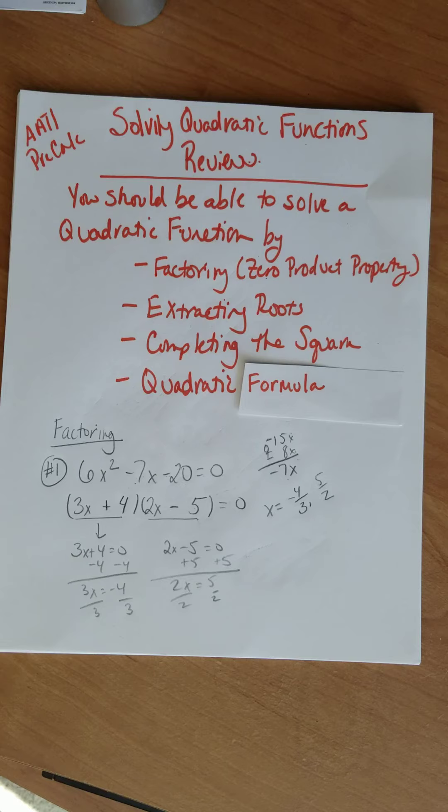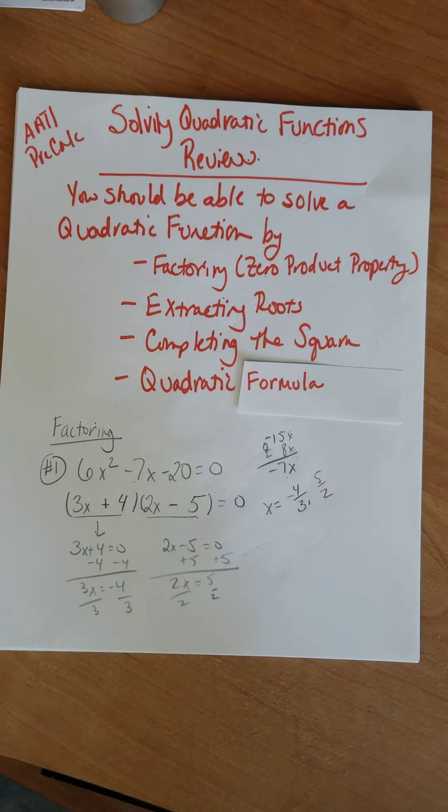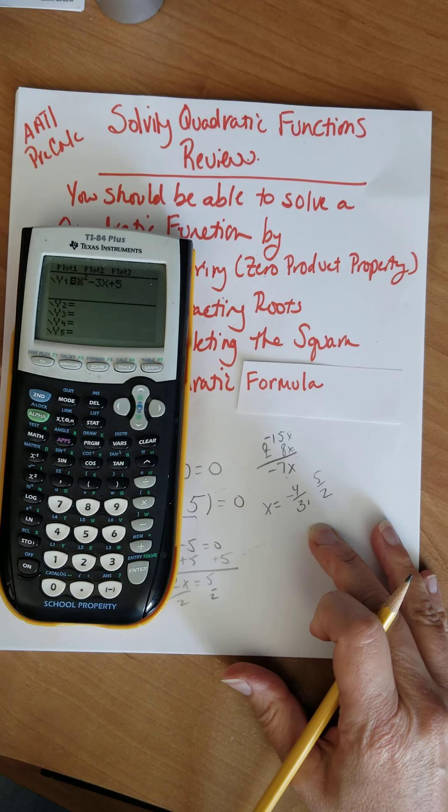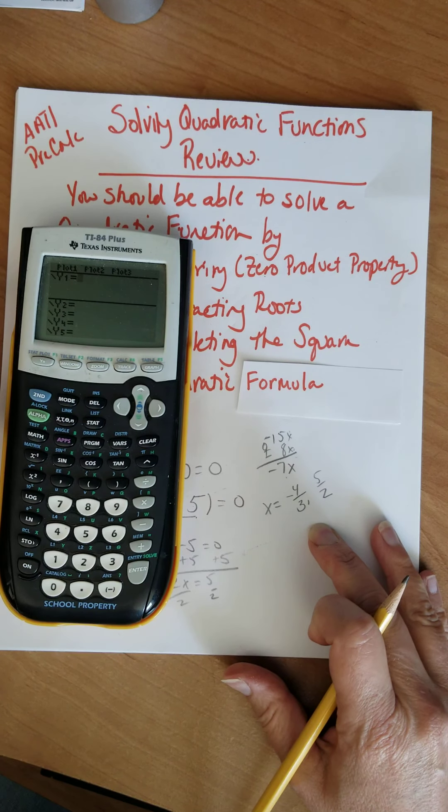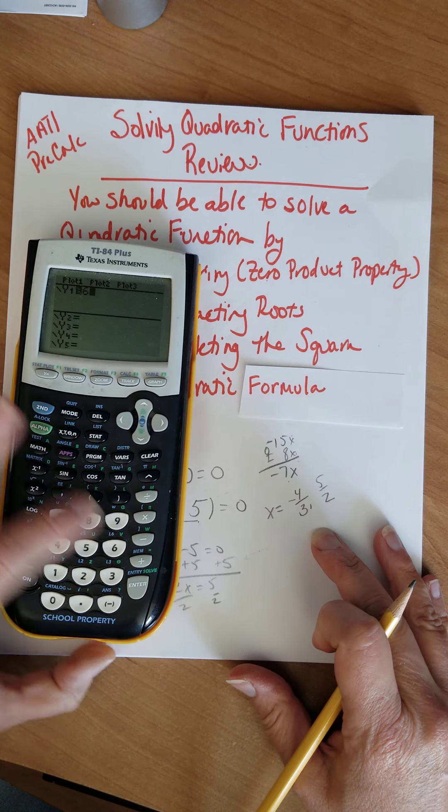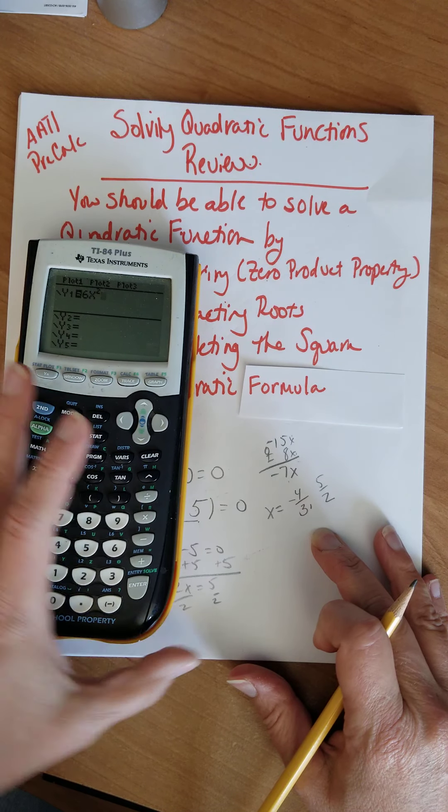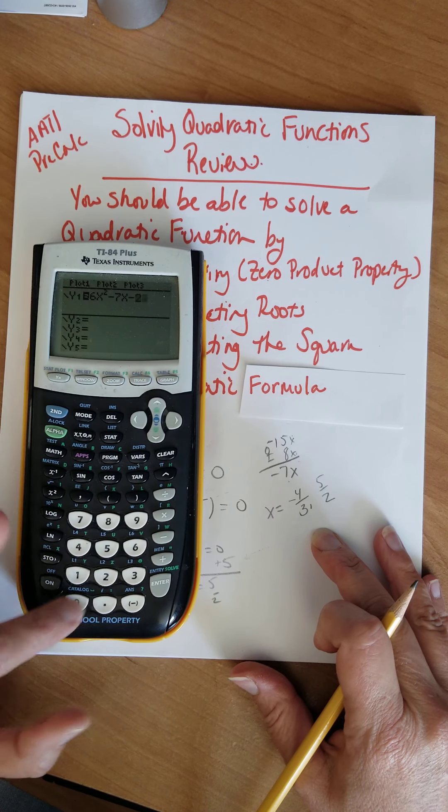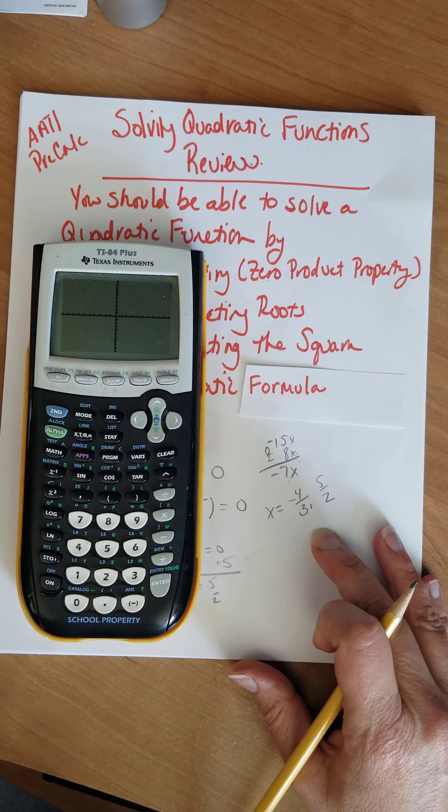All right? So if I want to check that on my calculator, what should happen is there should be x-intercepts here because that's what I'm trying to find are my x-intercepts. Let's clear this out and just check it out. So if I have the beginning equation was 6x squared minus 7x minus 20.